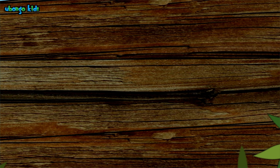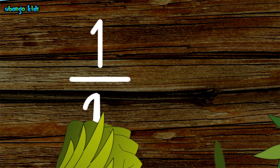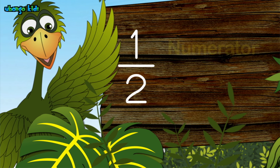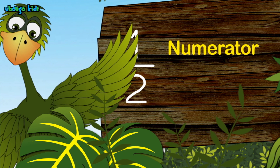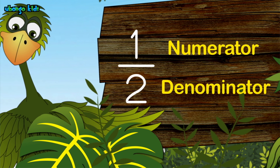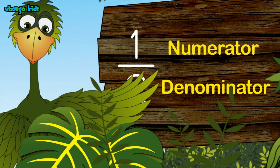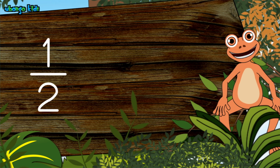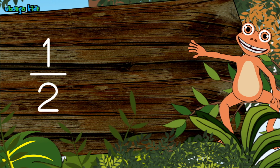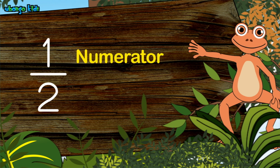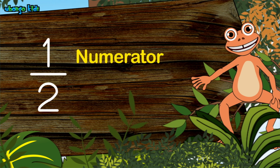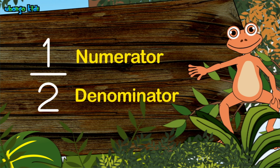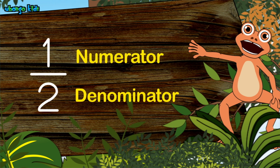That's right. And we write one half like this. The top number is called the numerator and the bottom number is called the denominator. Numerator, denominator. In Kiswahili, we call the top number Kiyasi and we call the bottom number Asili. Kiyasi, Asili. Numerator, denominator.